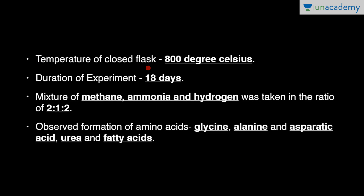The temperature of the closed flask was set at 800 degrees Celsius, which was assumed to be present on the primitive atmosphere. The duration of the experiment was 18 days. The mixture of methane, ammonia, and hydrogen was taken in the ratio of 2:1:2. Remember this ratio and the names of these gases.